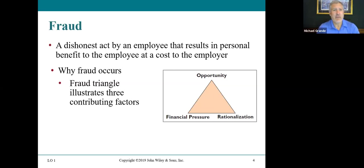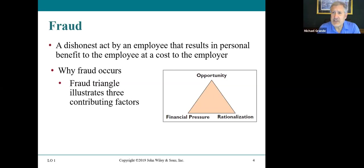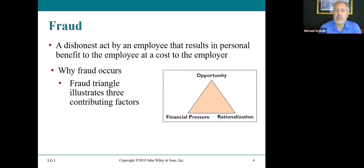We talk about the fraud triangle — why fraud occurs. There are three important elements: opportunity, where an employee sees the chance to take something; financial pressure, where an employee is spending more than they earn and can't pay their bills; and rationalization, where they come up with justifications like 'I won't get caught,' 'my company is so rich they won't miss it,' or 'my employer doesn't pay me enough.'